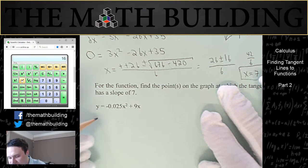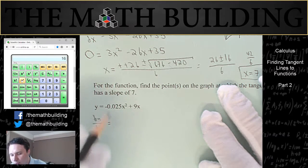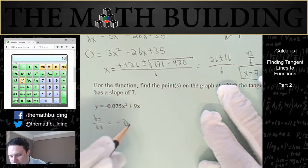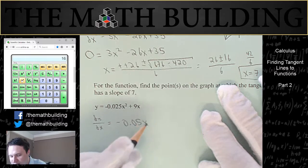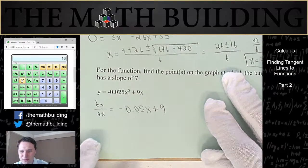First take the derivative. So dy dx is equal to, this will be, bring down the 2. So negative 0.05x plus 9. So that's going to be the derivative right there. Really easy to solve.